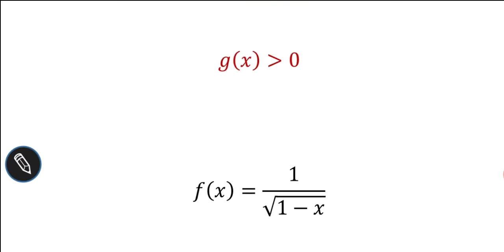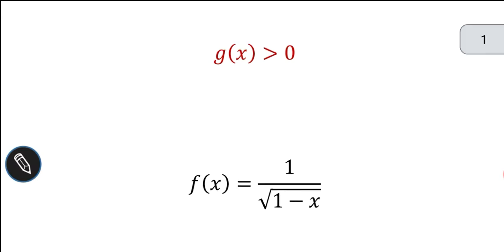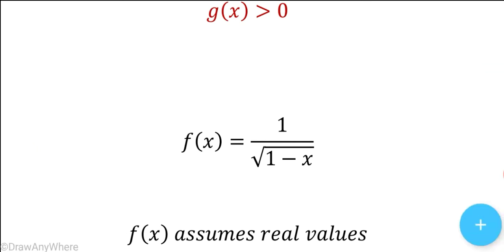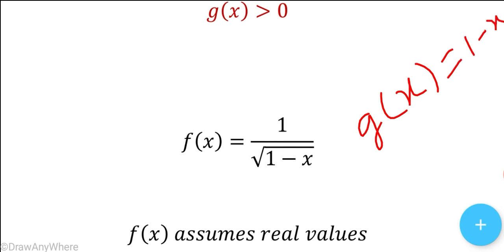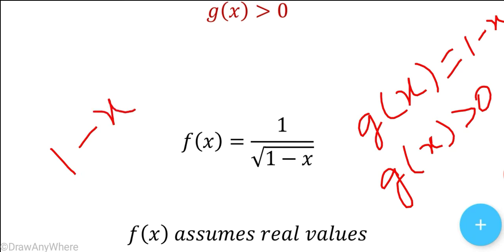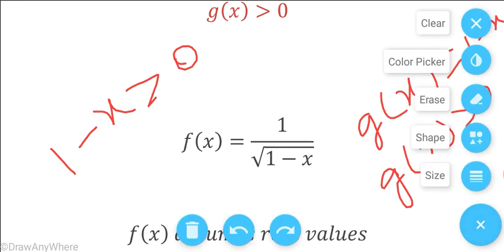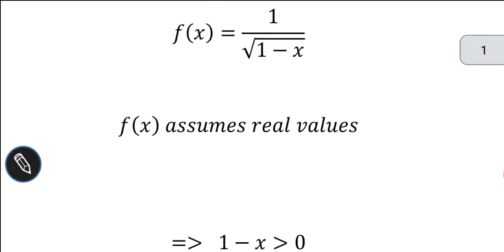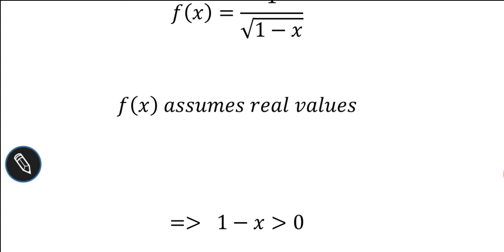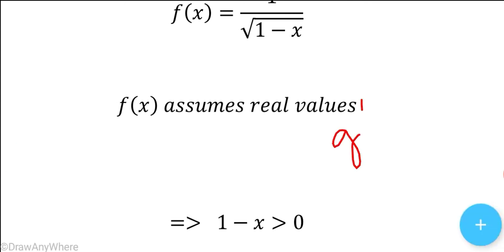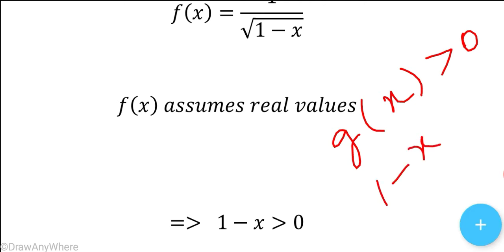In the given function f(x) = 1 divided by square root of 1 minus x, g(x) is equal to 1 minus x. So the procedure is: we have to put g(x) greater than 0. Since f(x) assumes real values, g(x) greater than 0, which means 1 minus x greater than 0.